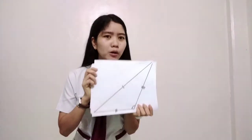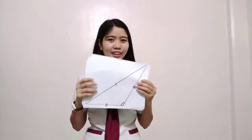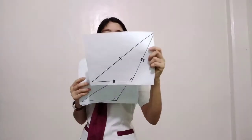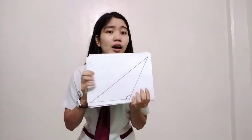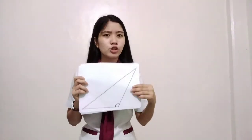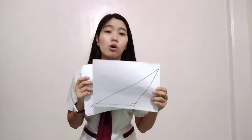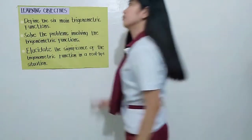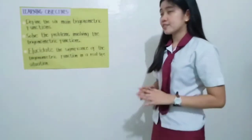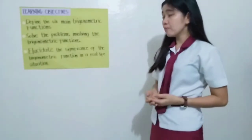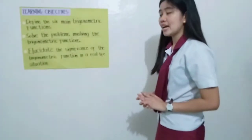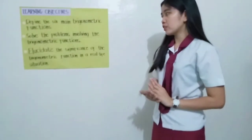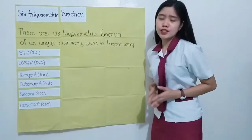And lastly, how about this one? Yes, Venansio. Very good, it is oblique. Very good, guys. Now, to formally start our lesson, I want you to read our learning objectives. Learning objectives: define the six main trigonometric functions; solve problems involving trigonometric functions; and elucidate the significance of trigonometric functions in real-life situations. The six trigonometric functions.